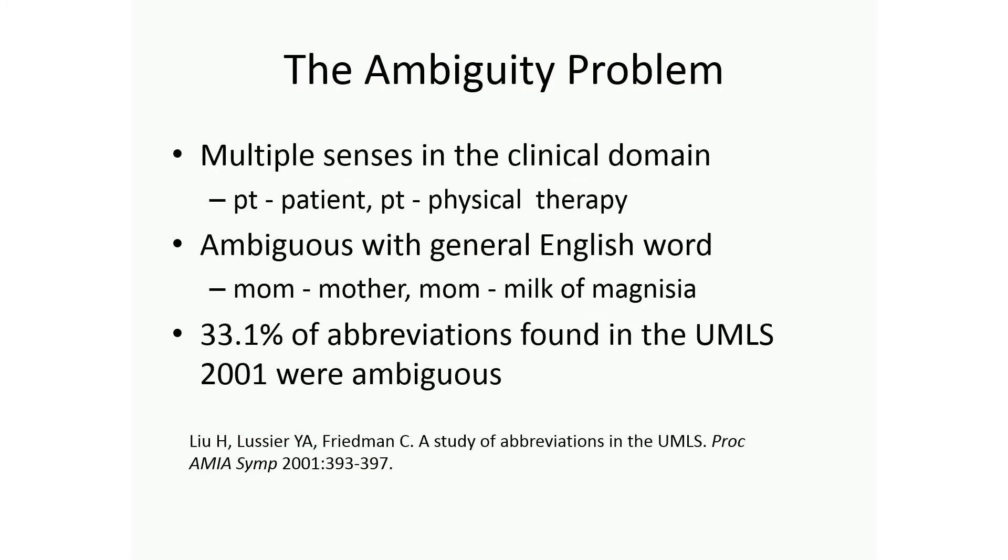The most challenging one is really about ambiguity. It's not just about recognizing the abbreviation, but if it just has one meaning, if you have a dictionary, that's easy to expand. But a lot of the time they have multiple meanings. PT can be patient, physical therapy, or prothrombin time, a lab test. Sometimes it's even ambiguous with English words. We see the word MOM - are you talking about mother or milk of magnesium? There's a lot of ambiguity.